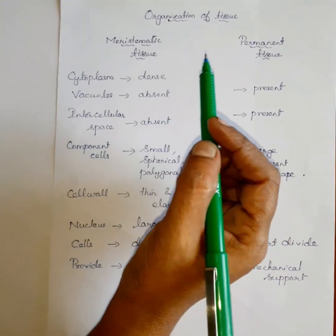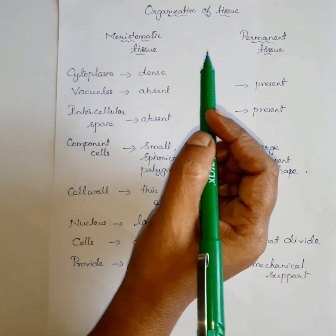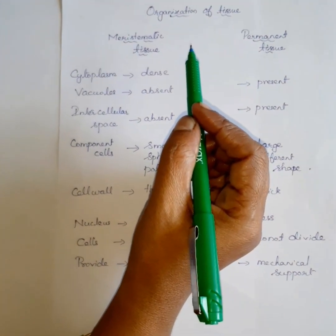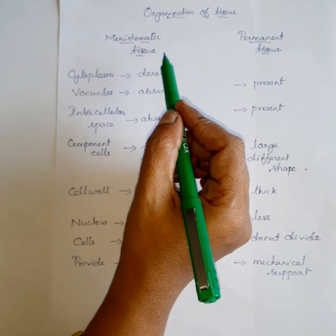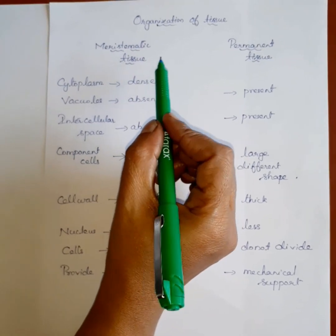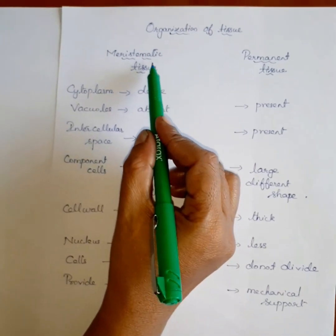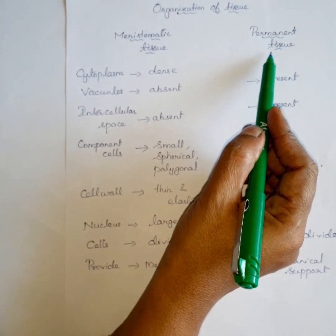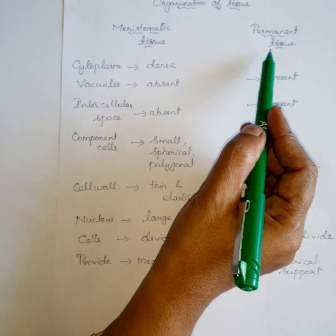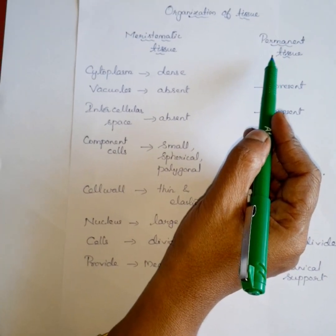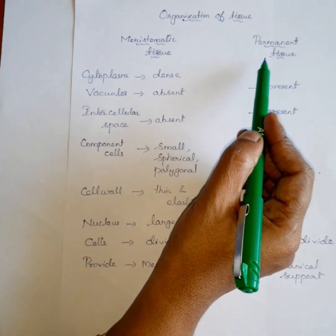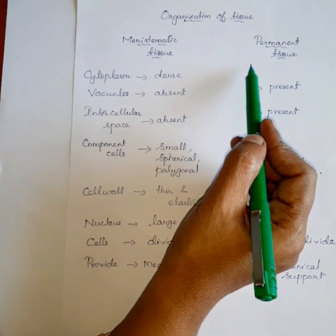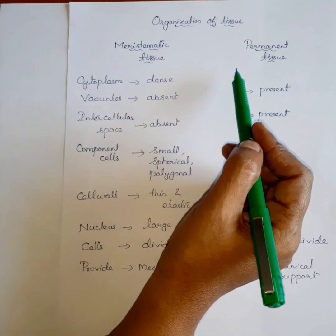Good morning students. Today we are going to learn about the difference between meristematic tissue and permanent tissue. In the previous part, we learned about the plant tissue.